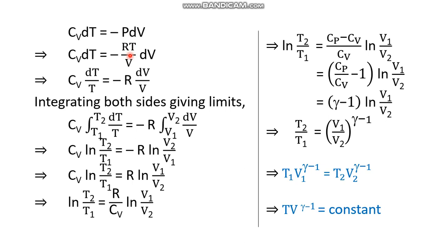Rearranging this, we get cv·dT/T on the left-hand side and −R·dV/V on the right-hand side. Here T and V are variables while cv and R are constants. Integrating both sides with appropriate limits — when temperature changes from T1 to T2, volume changes from V1 to V2 — we get: cv·ln(T2/T1) = −R·ln(V2/V1).